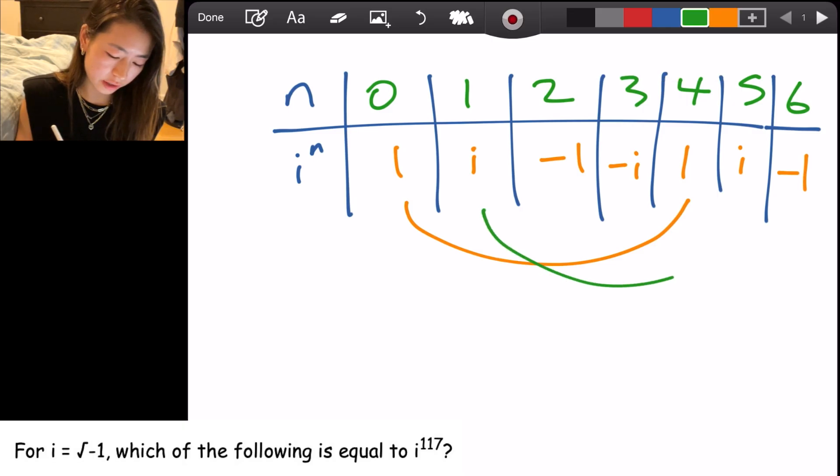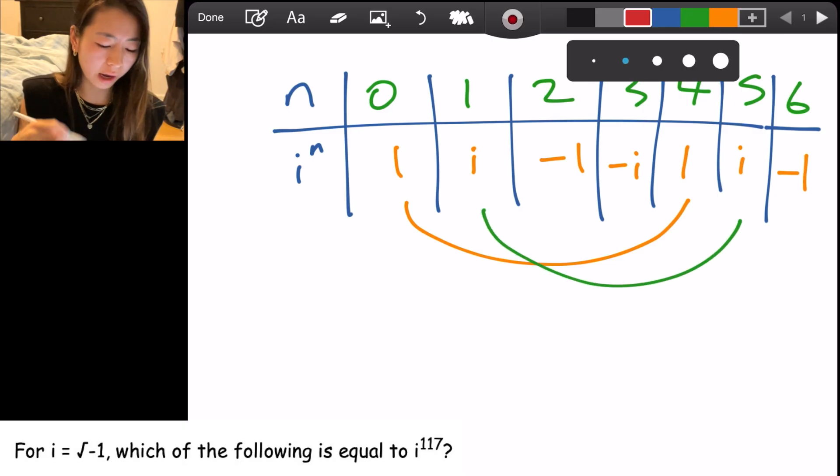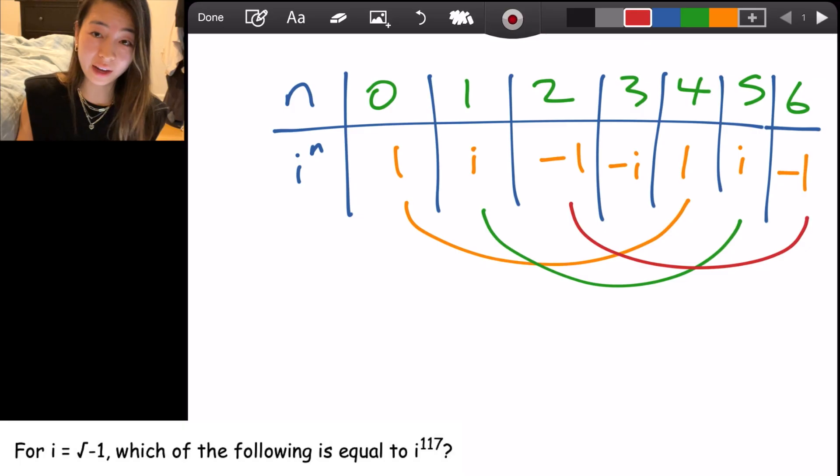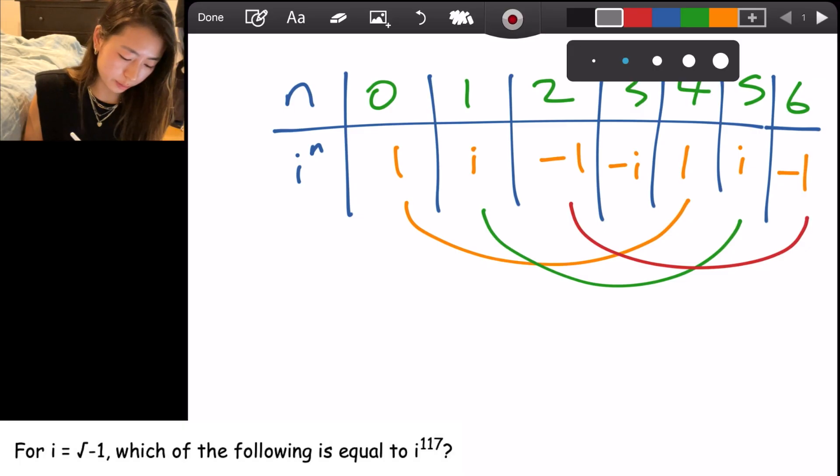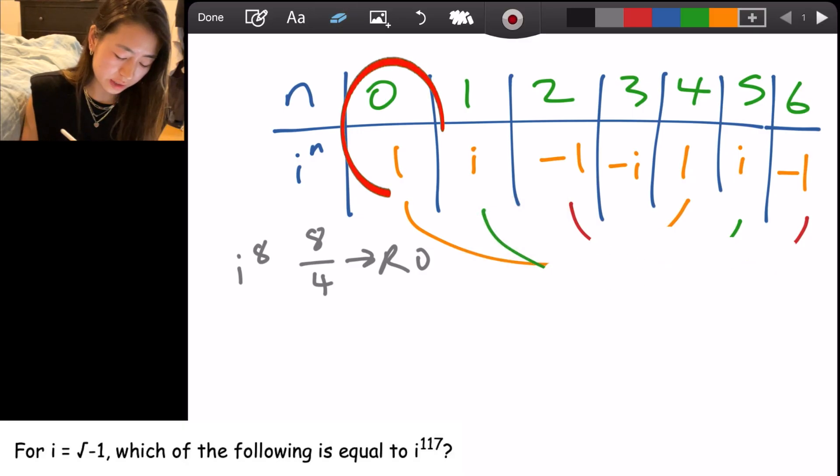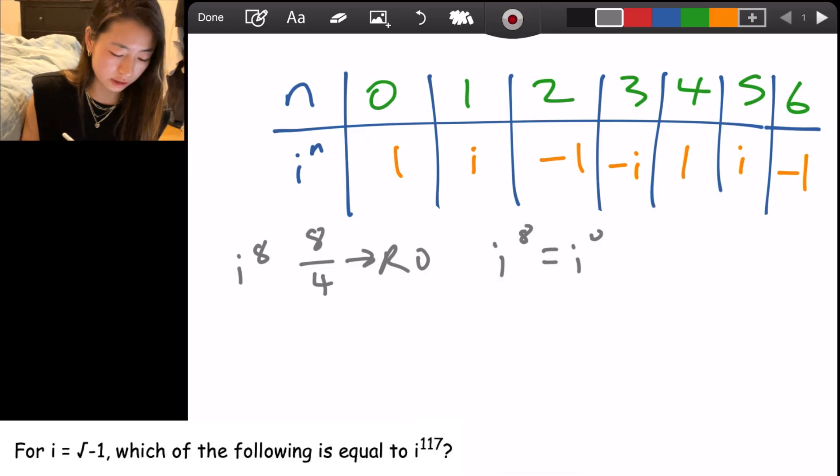And you see a pattern here because essentially every 4, you have the same result for i to whatever power. That's your pattern, your pattern of 4. For example, if we have i to the eighth power then, 8 divided by 4 has remainder of 0. So we can go into our table 0 because we know that i to the eighth is the same as i to the 0. i to the eighth equals 1.